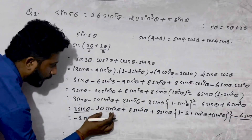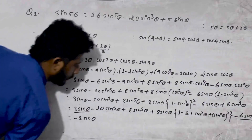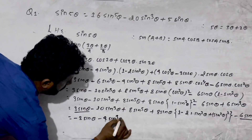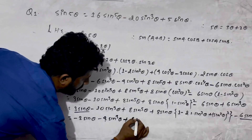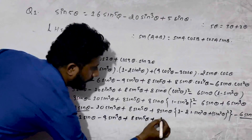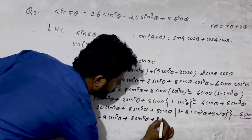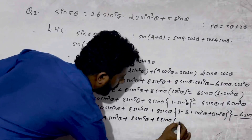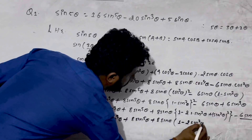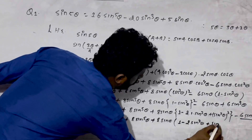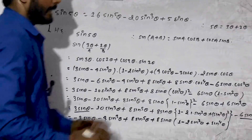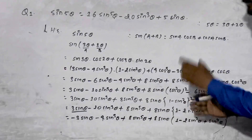We have minus four sin³θ plus eight sin⁵θ. Then eight sinθ into one minus 2sin²θ plus sin⁴θ, which is positive out of the expression.